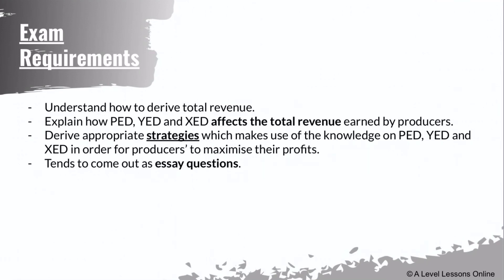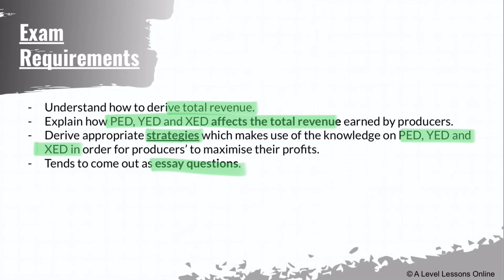In summary for Part 8a, you need to understand how to derive total revenue, explain how PED, YED, and XED affect total revenue earned by producers — whether it leads to a rise or fall — and the strategies producers can employ based on each elasticity. This part of the syllabus tends to come out as essay questions. Part 8b on consumer and producer surplus is coming shortly. If you have questions, leave them in the comments, and be sure to subscribe and like this video.